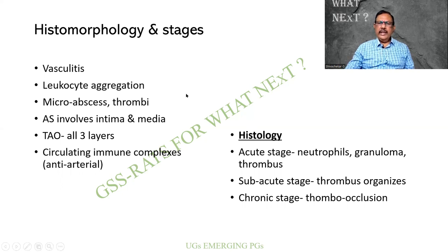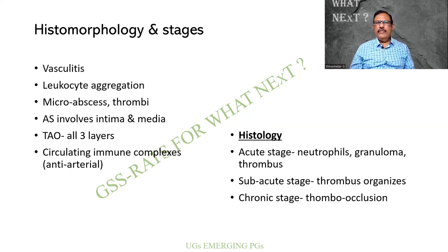Histologically, there are three stages. In the acute stage: neutrophils, granuloma, and thrombus. In the sub-acute stage, the thrombus becomes more organized. In the chronic stage, it leads to thrombosis and occlusion, resulting in ischemia and the changes we have observed.